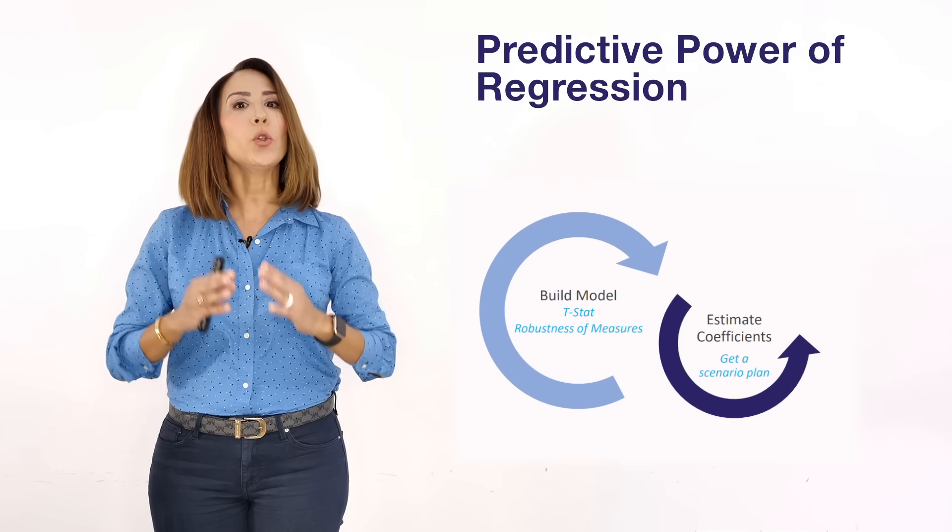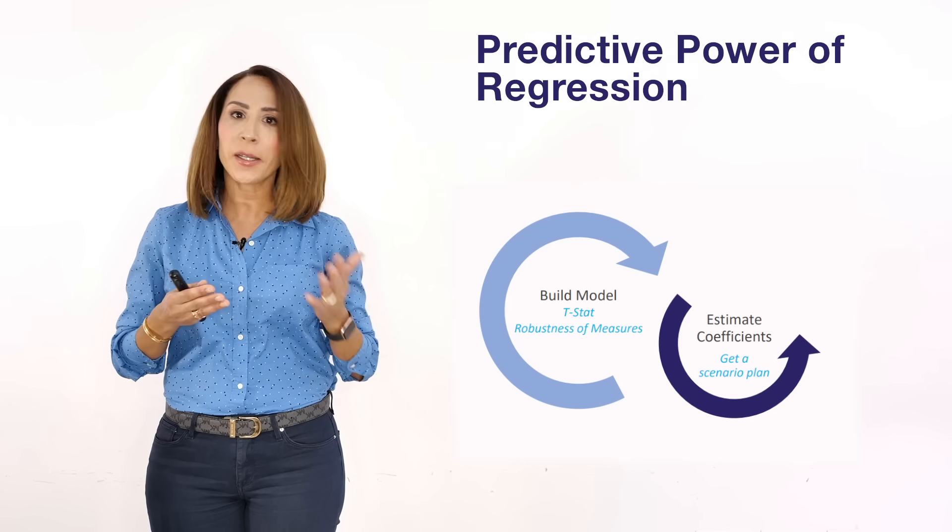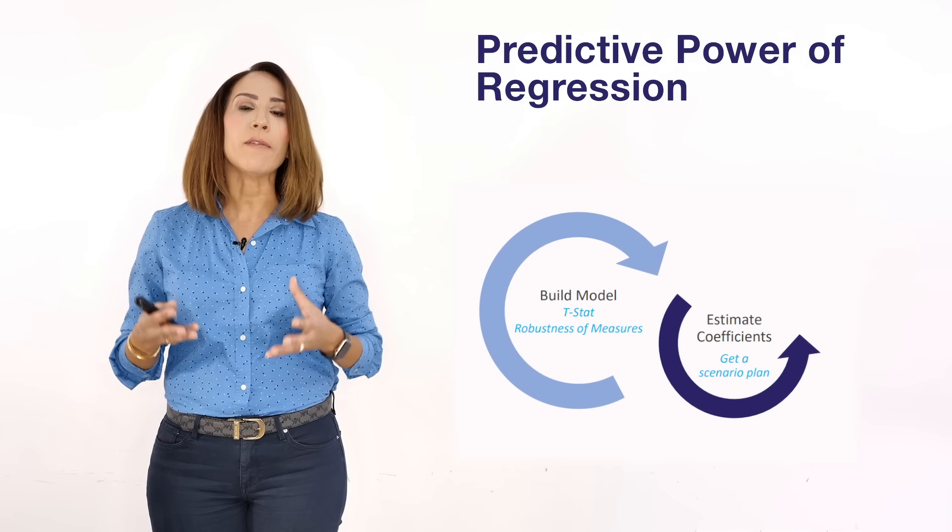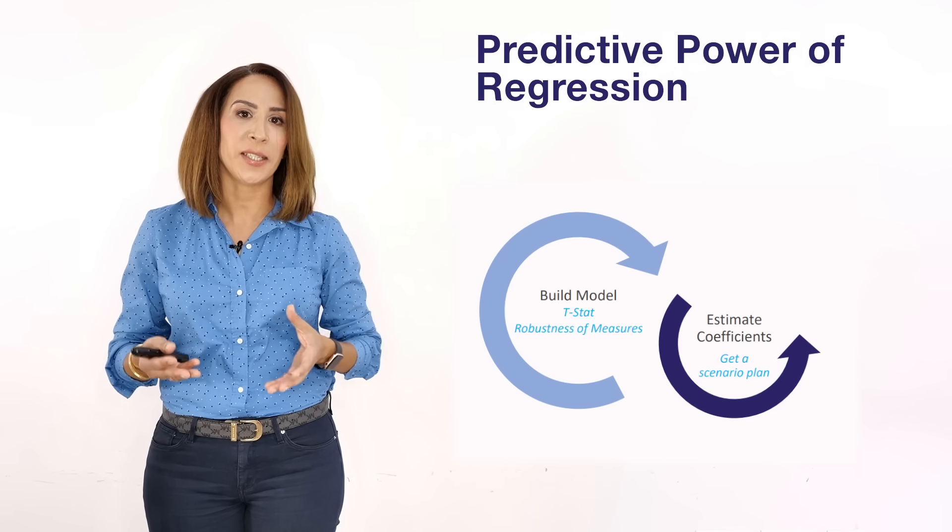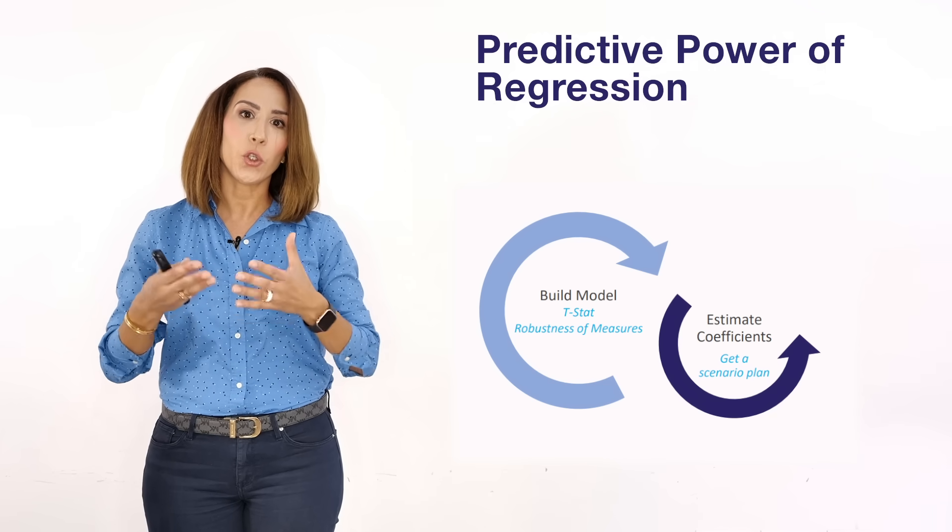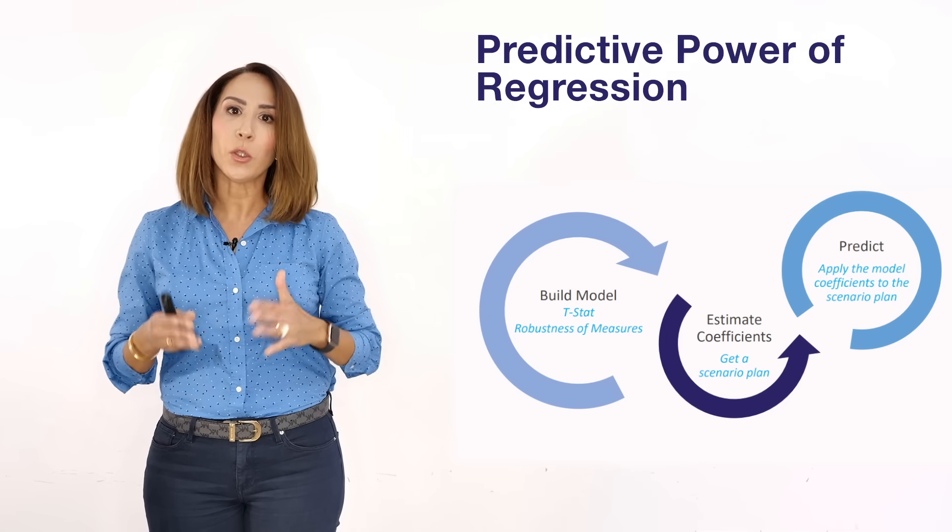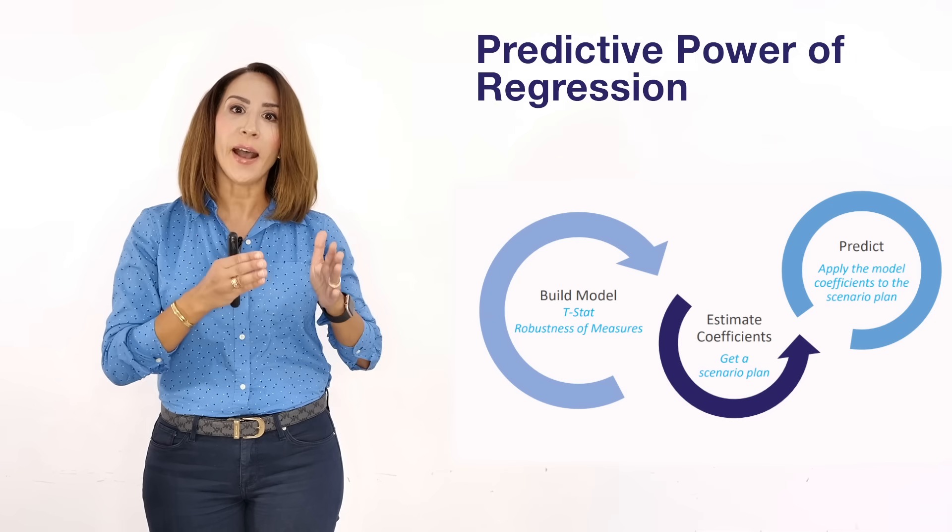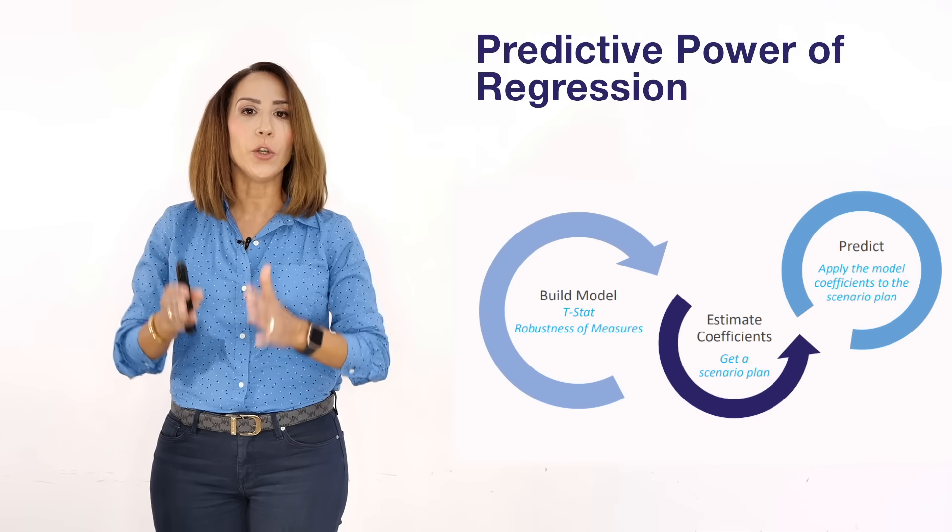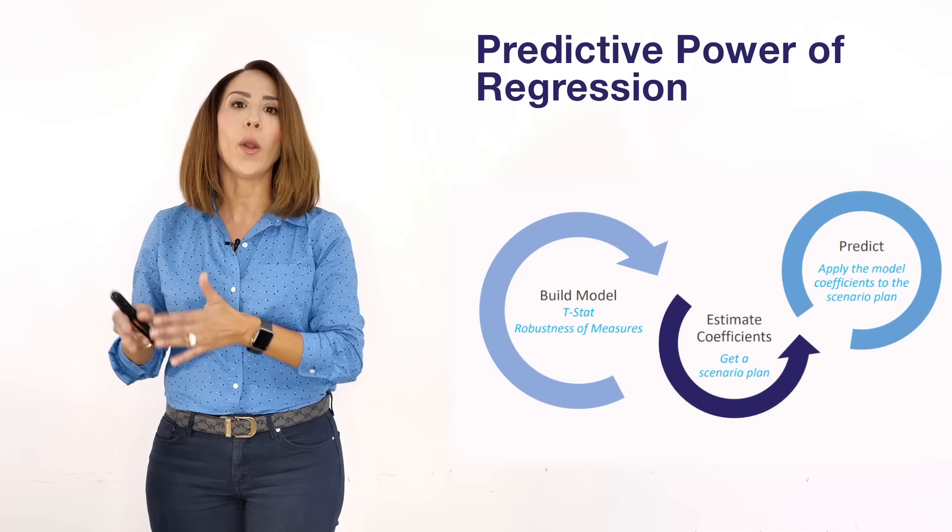Second will be to get a scenario plan. Generally the scenario plan will come from the business, the marketing director, the media planner, or the client or whoever is interested in evaluating the outcome of a specific scenario. In that scenario you will have the levels of activities that your client or the business is intending to invest in. Your job would be to take the model coefficients as estimated through your robust model and apply them to the scenario plan in order to predict how much sales you will be gaining when you follow that scenario plan.